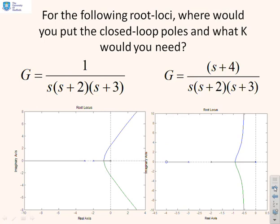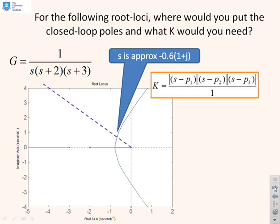Here are some examples: for the following root loci, where would you put the closed-loop poles and what K would you need? We'll do these one at a time. For the first example, G = 1/(s(s+2)(s+3)), an ideal place is where the real and imaginary parts are roughly equal in magnitude. By visual inspection, I've identified the desired closed-loop pole location as approximately −0.6(1+j).